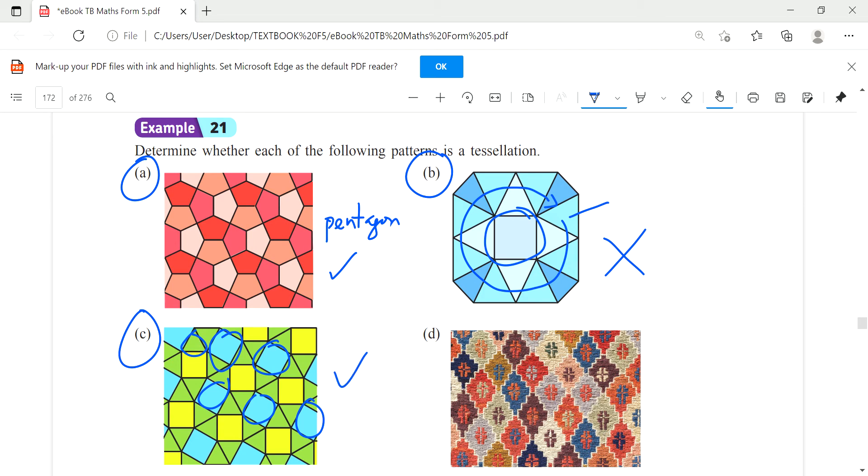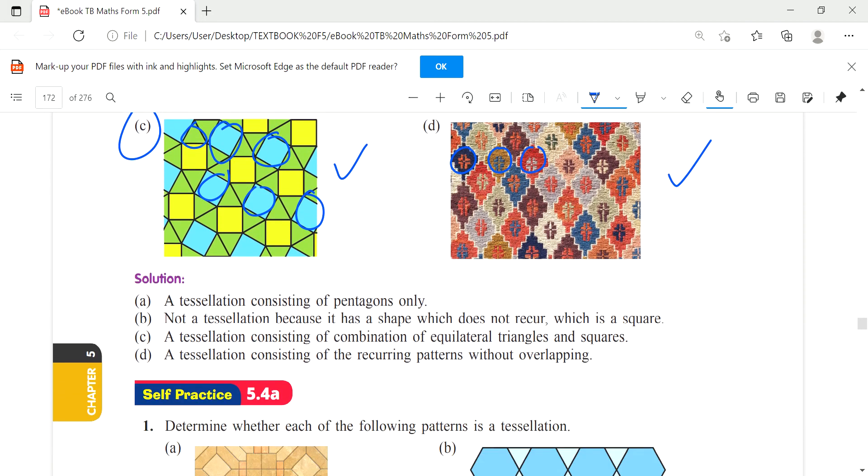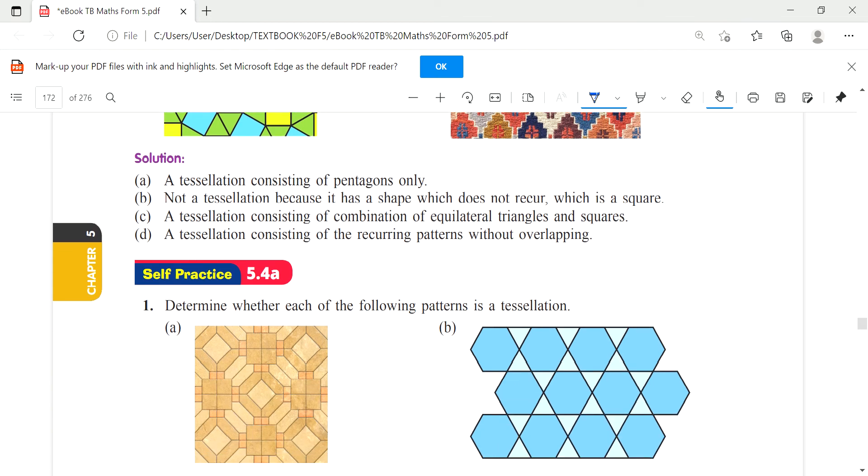C - you have a recurring square and also a triangle, so this is a tessellation. No empty space. And of course this one (D) also a tessellation, same pattern, only that it's a different color but it's the same pattern. This is not because the square does not recur.